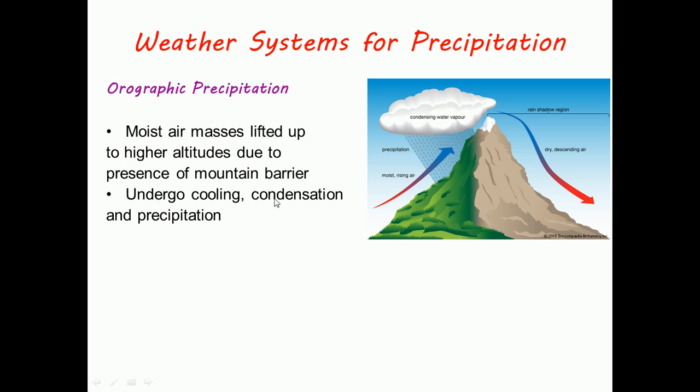In orographic precipitation, moisture rises to higher altitudes and condenses because of the presence of mountain barrier.